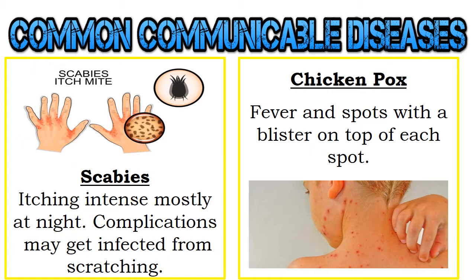Scabies, or itch mite, can be transmitted through direct contact with an infected person. It has intense itching, mostly at night, and complications may occur from scratching. The next is chicken pox — the mode of transmission is airborne through sneezing and coughing. You may have fever and spots with a blister on top of each spot.